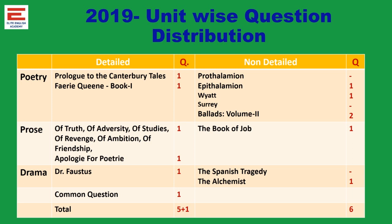Regarding the prose, from Bacon's Essays one question is asked, from Apology for Poetry one question. From the non-detail, the Book of Job — one chapter from the Old Testament — from which one question is asked. Then from Drama, from Dr. Faustus one question — that is the detailed work. From the non-detail, from Alchemist there is one more question. From Spanish Tragedy, there is no representation.